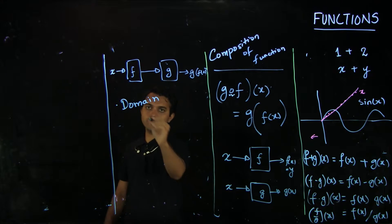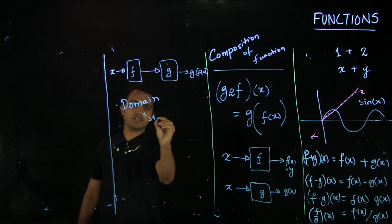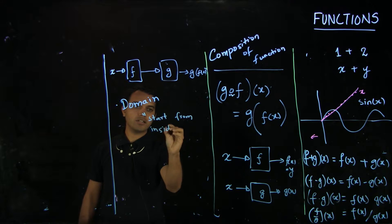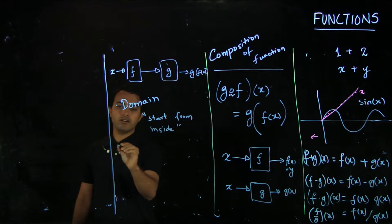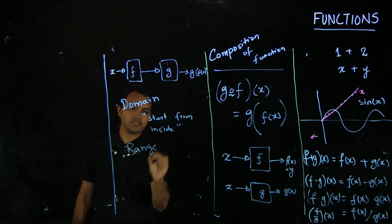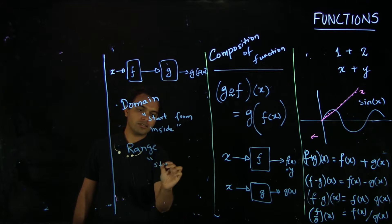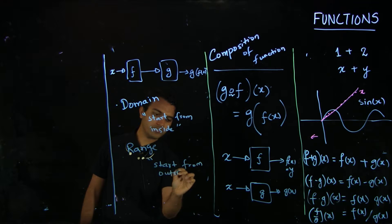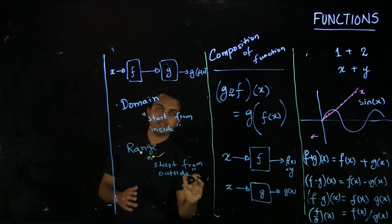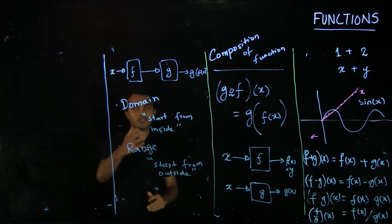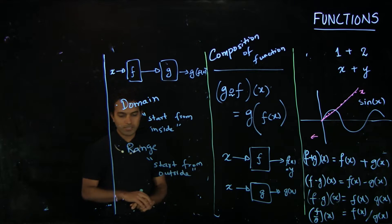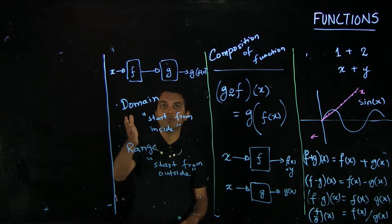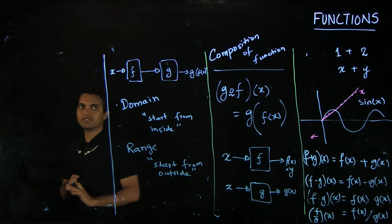To summarize the rules simply: to figure out the domain of a composition of functions, start from the inside. While trying to figure out the range, the rule is to start from the outside. These rules are very intuitive ideas, as you will see once we do some examples. Let us take a problem where we have to calculate the domain and range of a composition of functions, starting with a simple example.